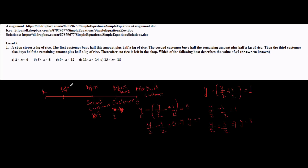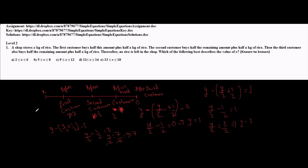Similarly I can find the quantity before the first customer. Taking this as Y: Y minus (Y/2 plus 1/2) equals 3. This gives Y/2 minus 1/2 equals 3, so Y/2 equals 7/2, which means Y equals 7. So before the first customer Y equals 7, which is nothing but X. Therefore X equals 7 kg. Looking at the options, 7 lies between 5 and 8 and no other option contains 7, so I will mark option B and move on.